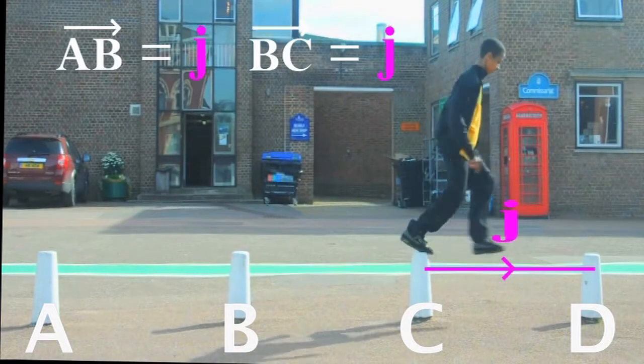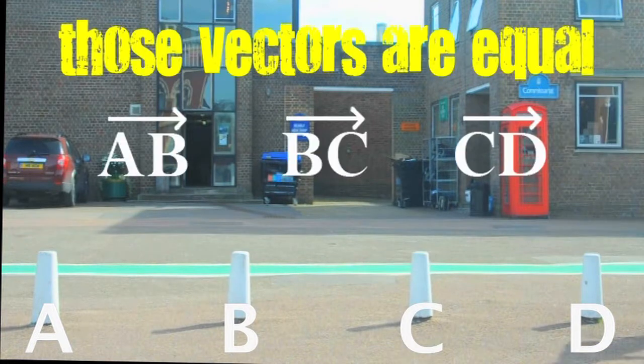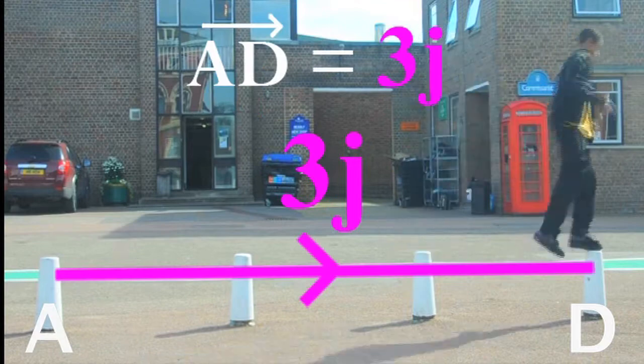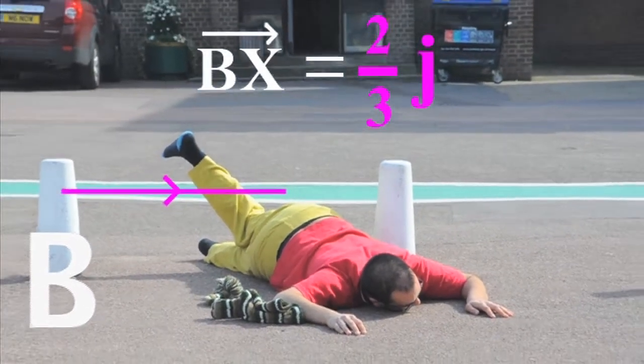Those vectors are equal. Double up your move and that's 2J. And this 3J goes all the way to D from A. If you don't quite get there, that's like a two thirds J.